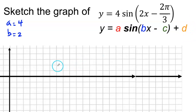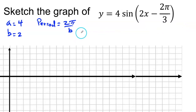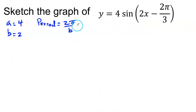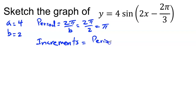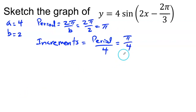Now that I have my amplitude and frequency, remember B is the frequency. I'm going to find the period of the function. The period equals 2π over B. B is 2, so I have 2π over 2, which gives me π. So this is one full period. After this I need to find my increments, which is the period divided by 4, so π divided by 4.